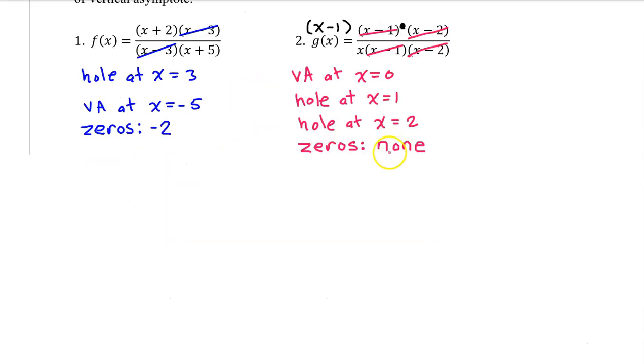Similarly, we have a hole at x equals 2 because this factor cancels out. Also, g of x will have no zeros because there are no factors in the numerator that are only in the numerator.